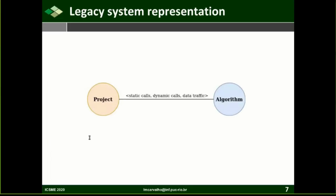In the first step of the approach, we need to derive a representation of the legacy system based on the code, where methods are nodes of the graph and the edges contain information about their relations. The execution path and the legacy program's execution traces are used to compute the number of static calls, dynamic calls, and data traffic. To compute feature modularization criteria, we also label edge events with features that execute the method, as shown in the picture.